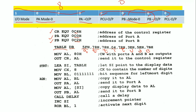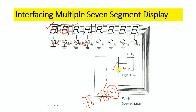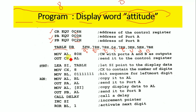The 8255 is in IO mode of operation and all ports act as output ports, because in this program Port A and Port B are acting as output ports. So 'MOV AL, 80H' and 'OUT CR, AL' configures the 8255 in IO mode with all ports as output.